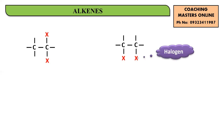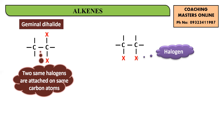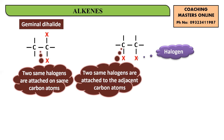So, in the first case, two halogen atoms on the same carbon — this is called geminal. In the second case, two halogen atoms attached on adjacent carbon atoms — this is referred to as a vicinal dihalide. So you can have two types of dihalides: geminal dihalide and vicinal dihalide.